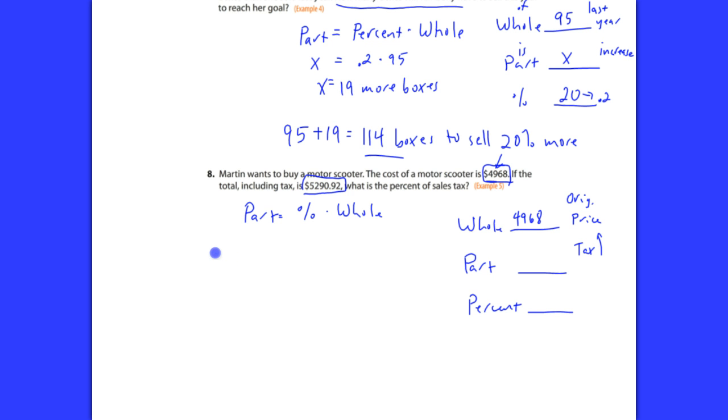If I subtract $5,290.92 minus $4,968, you get 322.92. That's the tax that they paid on the original price. So, what we want to know, what was the percent of sales tax that they had to pay for that? That is X, basically.